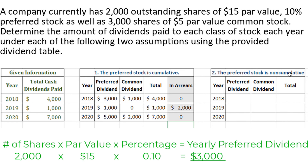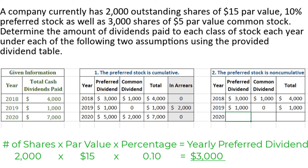Now let's look at the case when the preferred stock is non-cumulative. In 2018, there were $4,000 in total cash dividends paid. The preferred dividend is $3,000, so $3,000 goes to preferred shareholders, and the remaining $1,000 goes to common shareholders. Note that we don't have a column for dividends in arrears here, because when stock is non-cumulative we don't track missed dividends. In 2019, $1,000 in total cash dividends were paid — less than the $3,000 preferred dividend — so the entire amount goes to preferred, and nothing is left for common. In 2020, $7,000 in total cash dividends were paid. Since the preferred dividend is $3,000, $3,000 goes to preferred and the remaining $4,000 goes to common, for a total of $7,000.